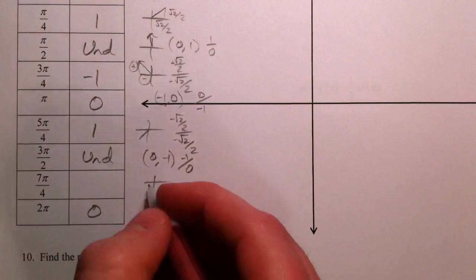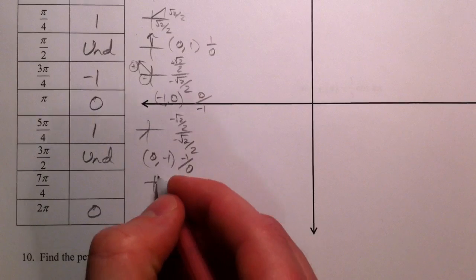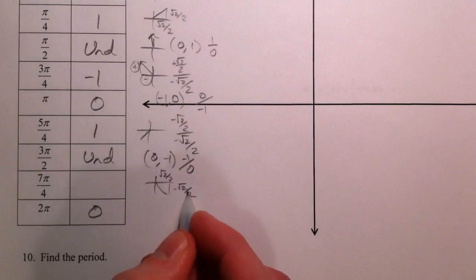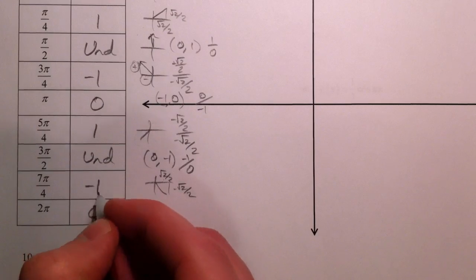And 7pi over 4, down here, root 2 over 2, negative root 2 over 2. Anything, 1 negative, 1 positive, so we get a negative 1.